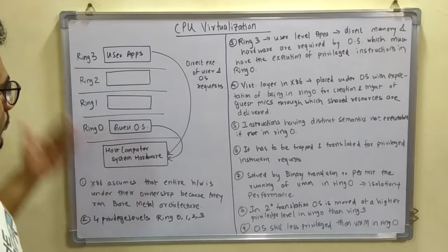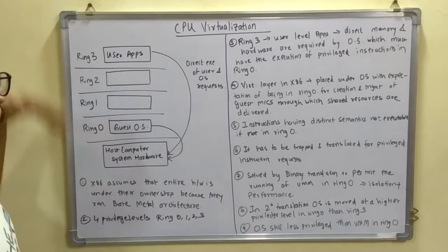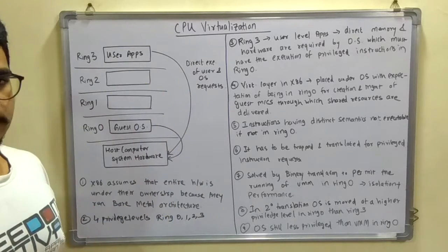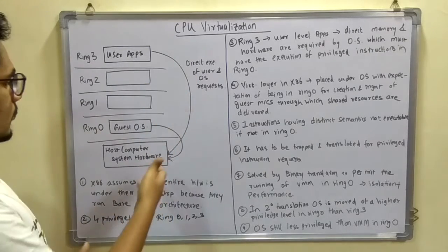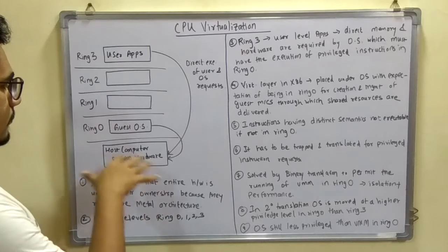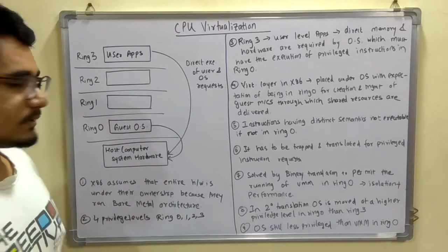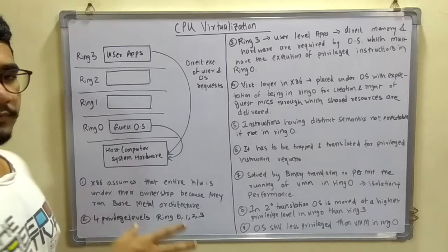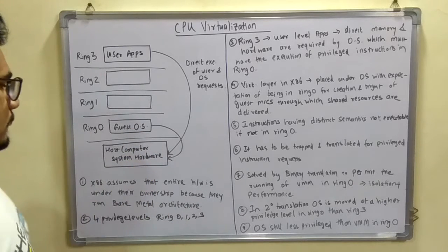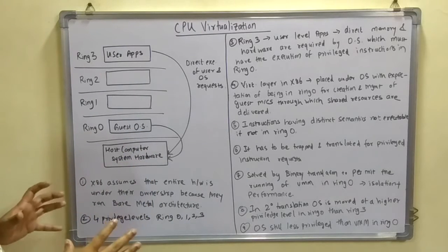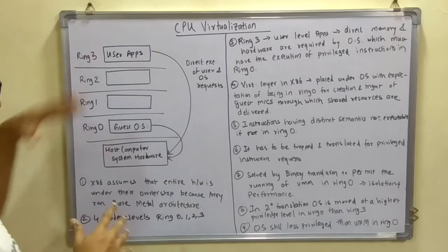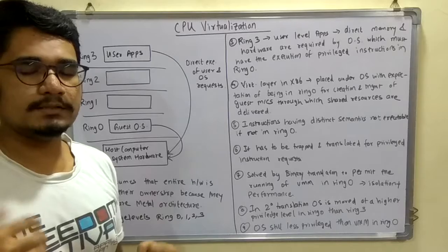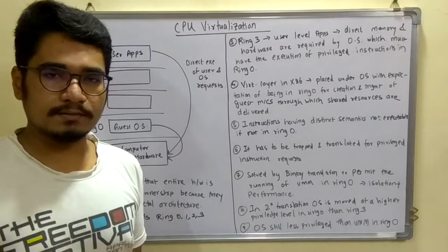Ring 3 is basically used for execution of user requests, executed at the host computer hardware at the base level. The guest OS can directly execute or request operations at the base level. Now the diagram is clear — so why do we virtualize the CPU?